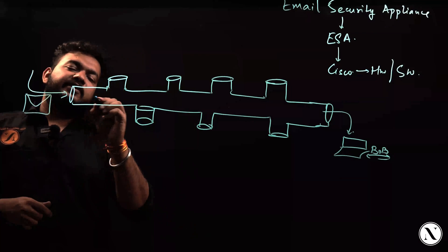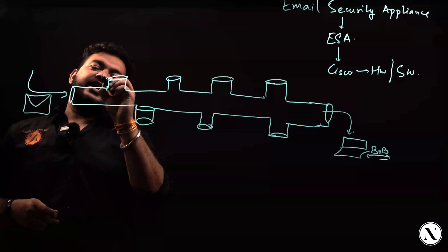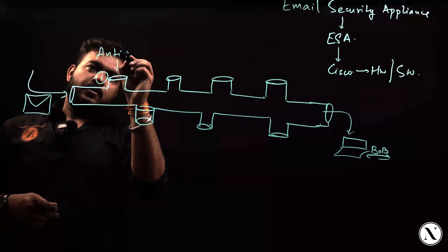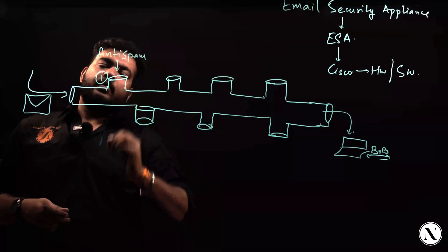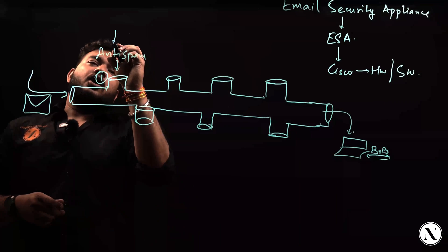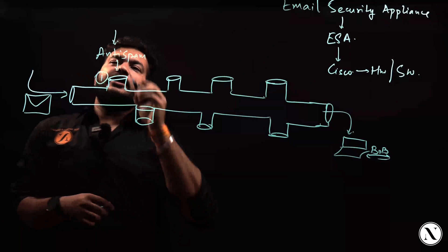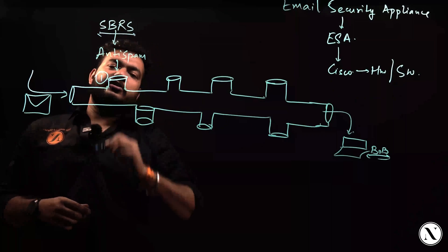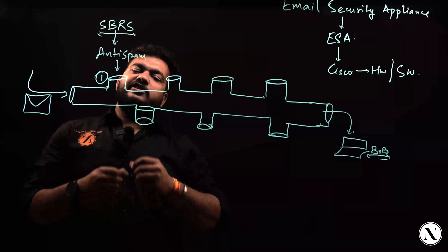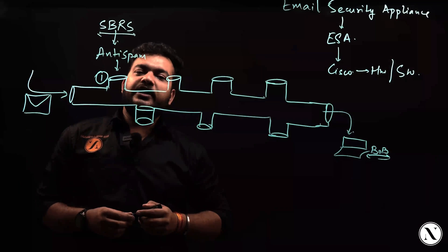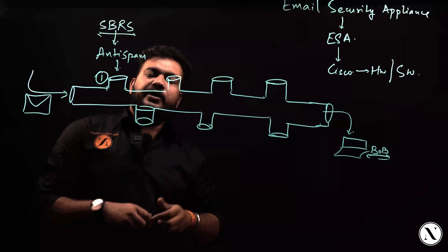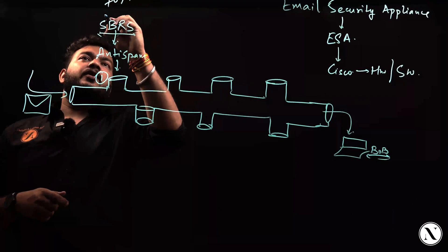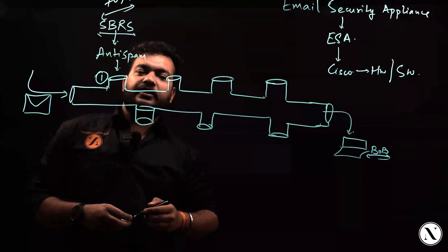Once the email is received inside the pipeline, the very first check is with respect to anti-spam. We will talk in detail later about SBRS, also known as sender-based reputation score, which is a score generated for different domains and IP addresses. Based on that, 70% of the filtering will be done right there at Layer 3.